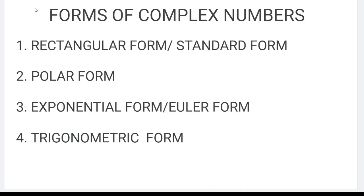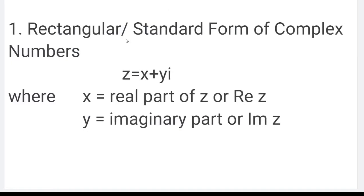Welcome back to another advanced math video tutorial. This time we will discuss different forms of complex numbers. We have four different forms: namely rectangular form or standard form, polar form, exponential or Euler's form, and trigonometric form. The rectangular or standard form consists of a real part and imaginary part of complex number Z, written as X plus Yi. This is the standard form of our complex number.